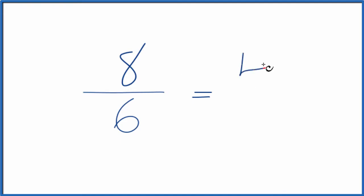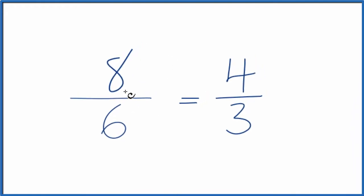8 divided by 2, that's 4. 6 divided by 2, that's 3. So the fraction 8/6, we can simplify that down to 4 thirds.